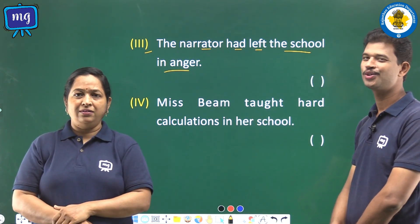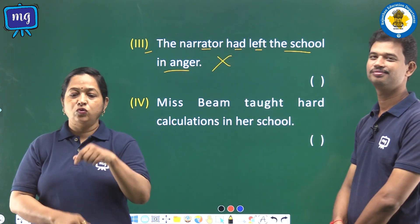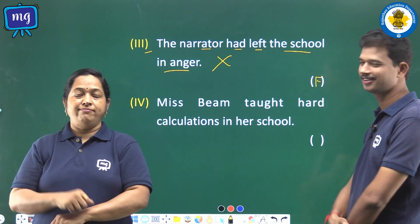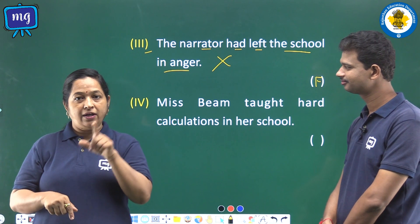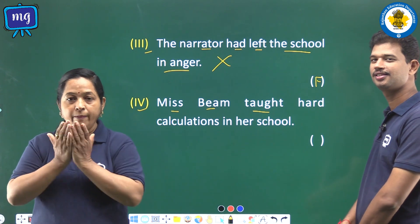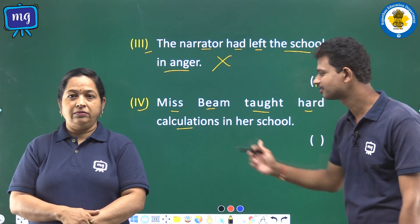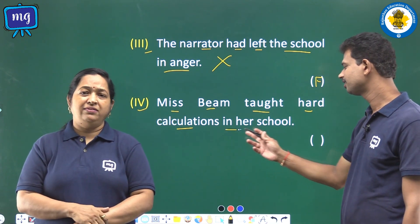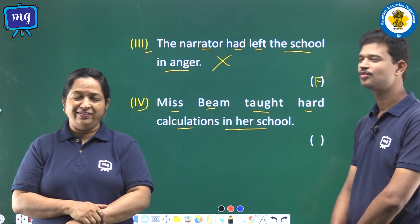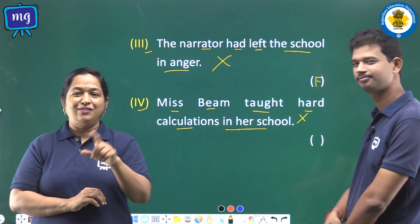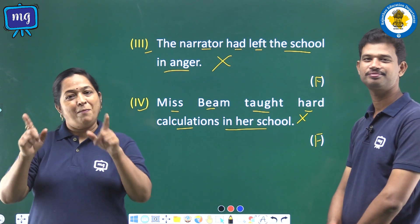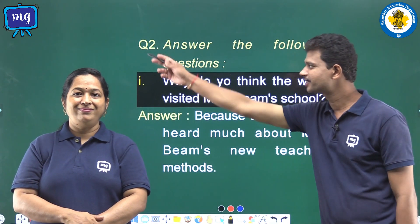Third: the narrator had left the school in anger. Is it correct? No, it's not correct, so we shall write F in the bracket. Fourth: Miss Beam taught hard calculations in high school. Is it correct? No, it's wrong, so we shall write F in the bracket.